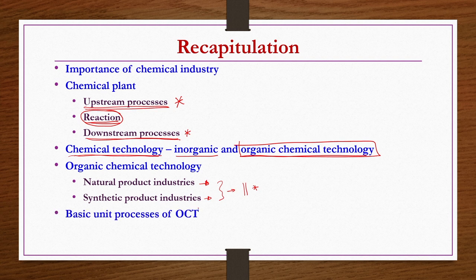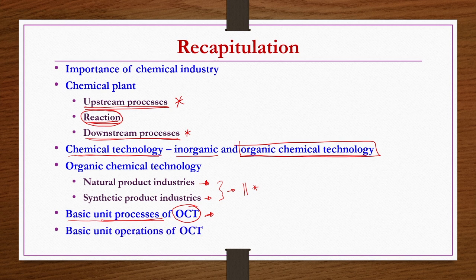We have seen some basic unit processes of organic chemical technology. In organic chemistry, a huge number of reactions are there; we cannot go through each and every one. So we have taken a few unit processes of organic chemical technology and discussed them. Likewise, we also discussed basic unit operations of organic chemical technology. These unit operations are not necessarily for organic chemical technology only — they are also useful in inorganic chemical technology as well. Now, before going to the main contents of today's lecture, we will see a few more common unit operations of organic chemical technology.